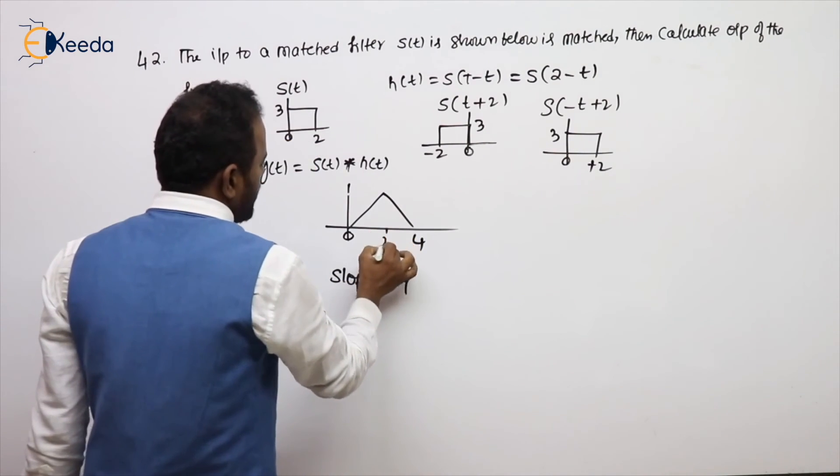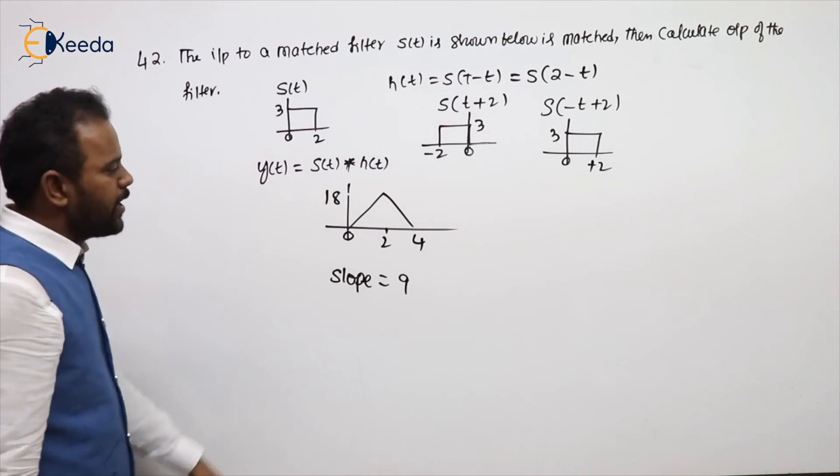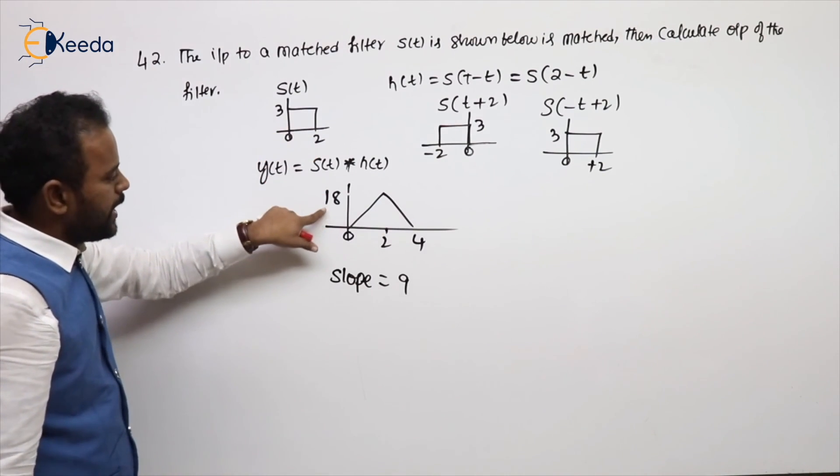One unit of time they can rise up to 9, two units of time up to 18. We already know its peak value is nothing but energy of the signal, 9 into 2, 18.